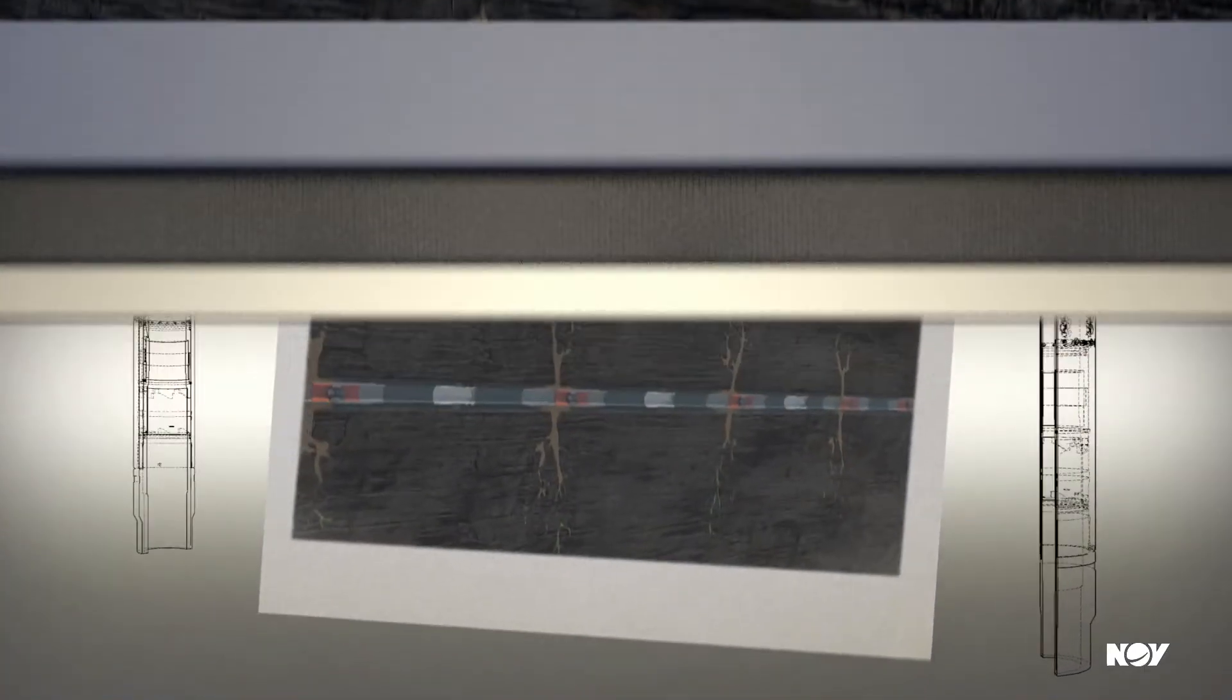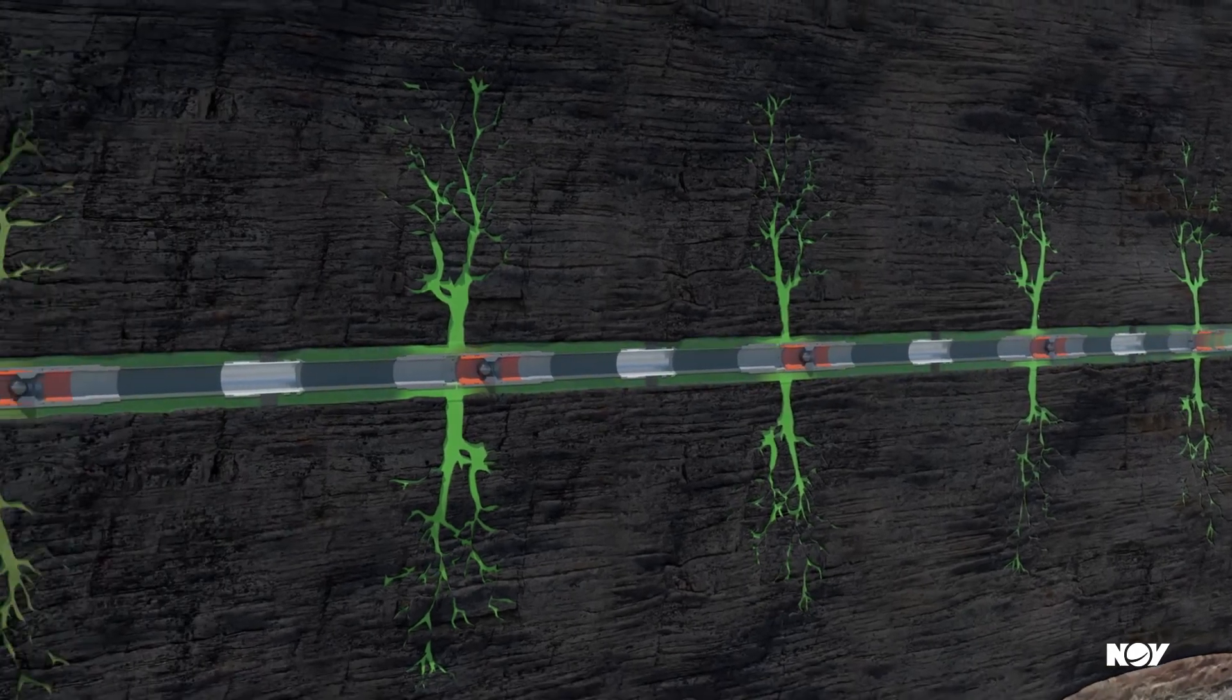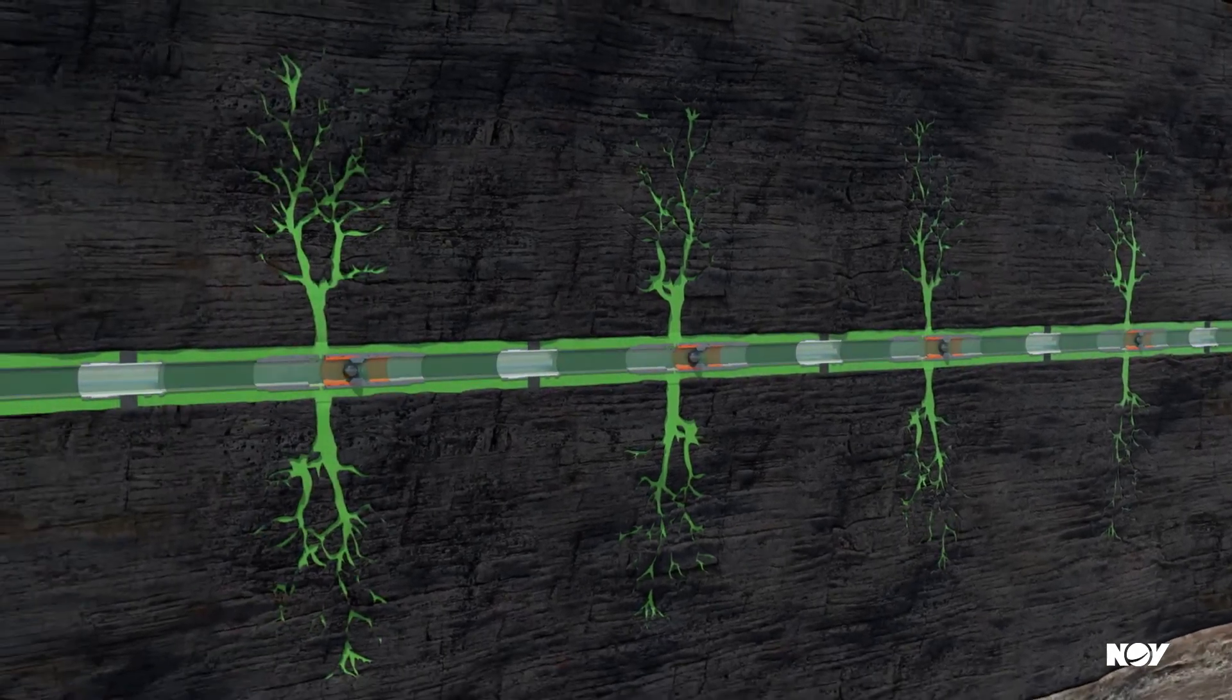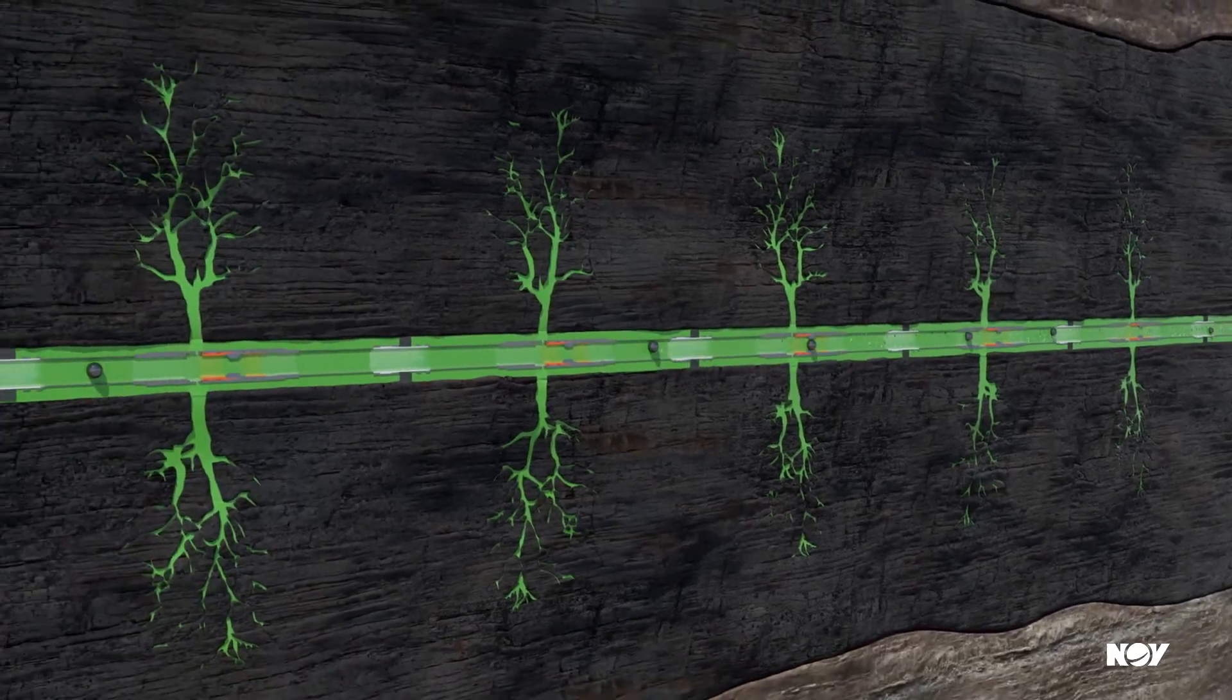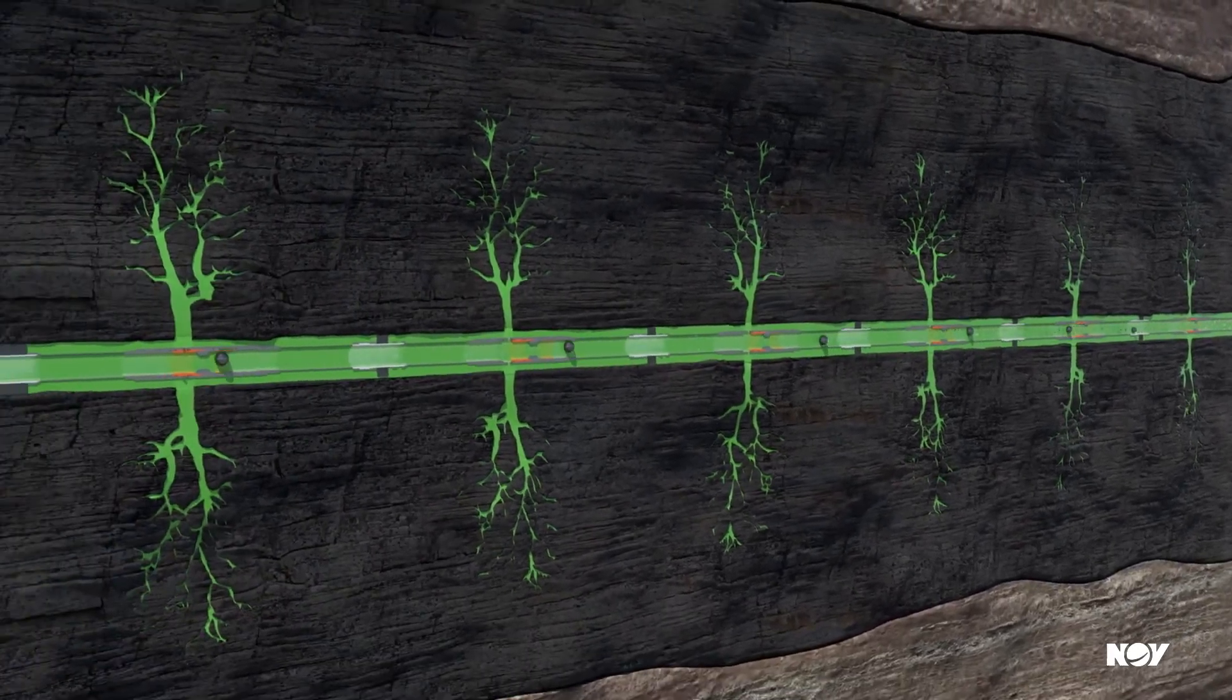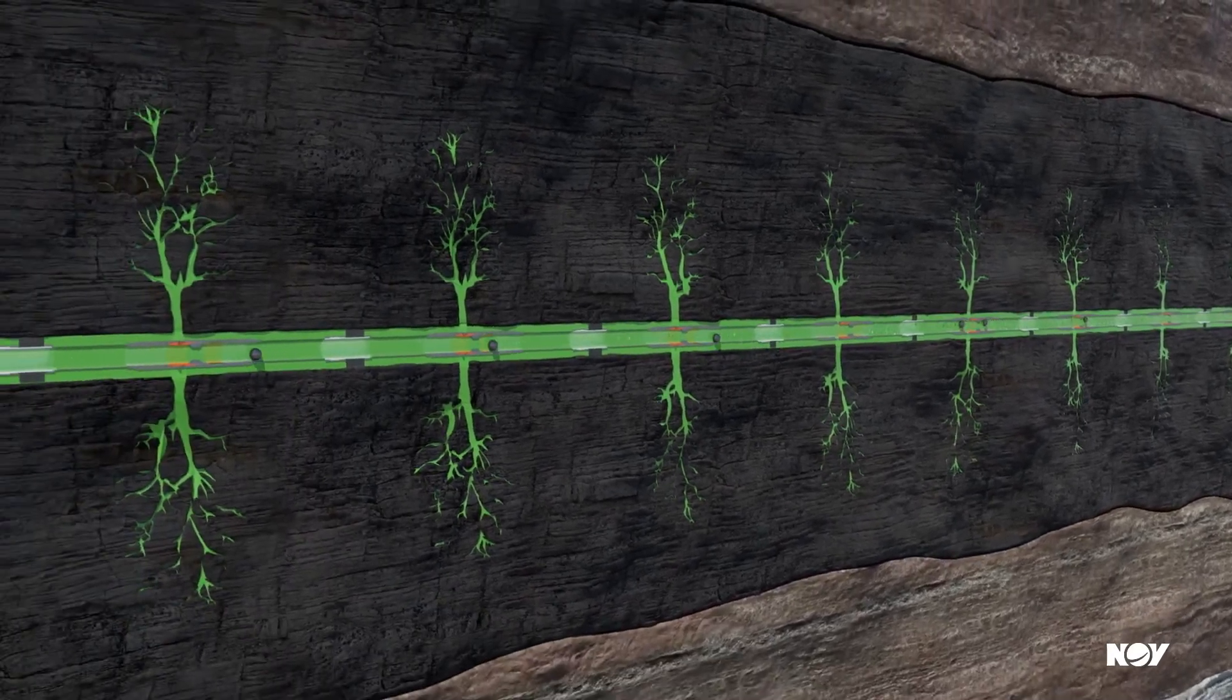Once all stages are fractured, the formation is allowed to flow. The option to use dissolvable FRAC balls ensures unrestricted flow to the surface and further reduces the need for wellbore intervention.